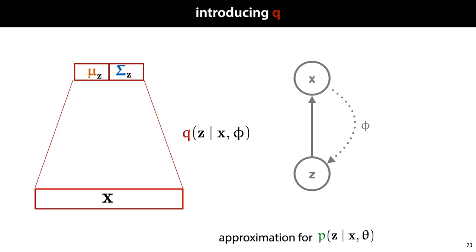The network q takes as its input x and produces for us a normal distribution on z. It has its own parameters phi, which are not related to the parameters theta of p. We should think of this neural network as an approximation to the actual conditional distribution on z under p, which is difficult to compute. We now need to figure out a way to train p and q in concert — to update the parameters of p to fit the data, and at the same time, to update the parameters of q to keep it a good approximation to the inversion of p.